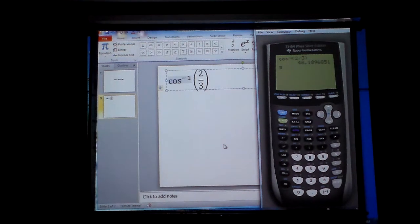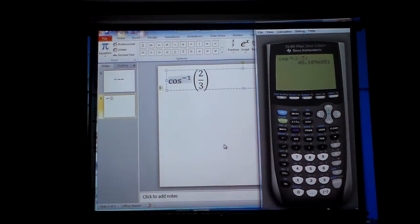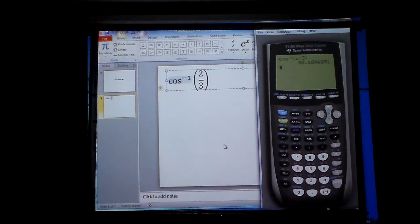The thing to be careful about is remember this. Arc cosine gives you the angle. So that ratio has to be less than 1 or it's going to give you an error message. So that's how you find it.